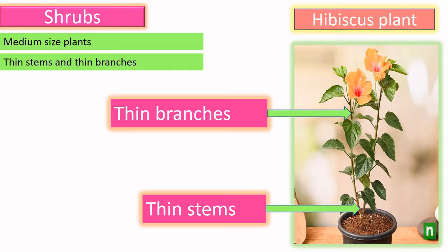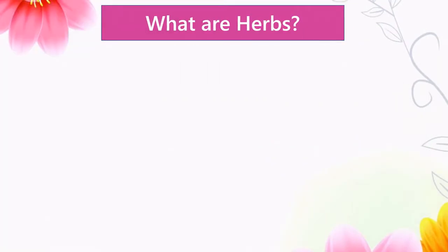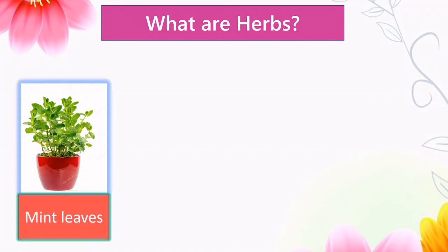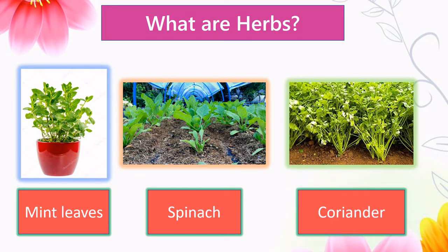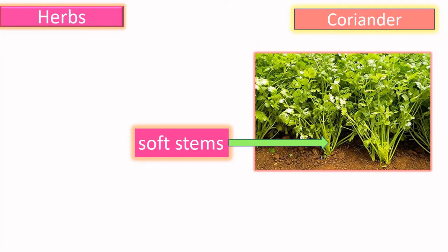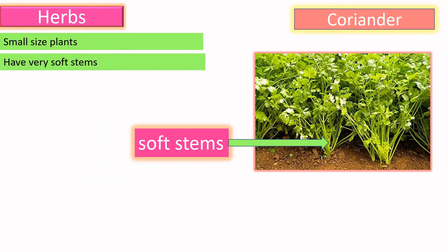What are herbs? Let us see some examples: mint plant, spinach, and coriander. Compared to trees and shrubs, herbs are small-sized plants and they have very soft stems. Let us look at the example of coriander — coriander has very soft stems.